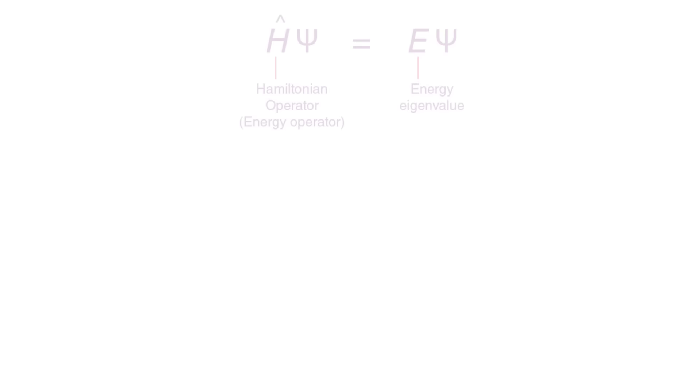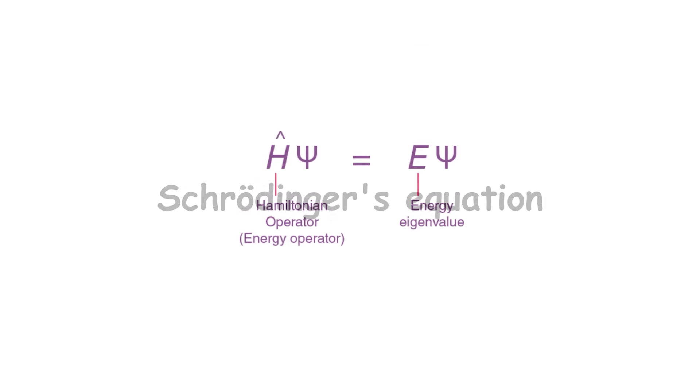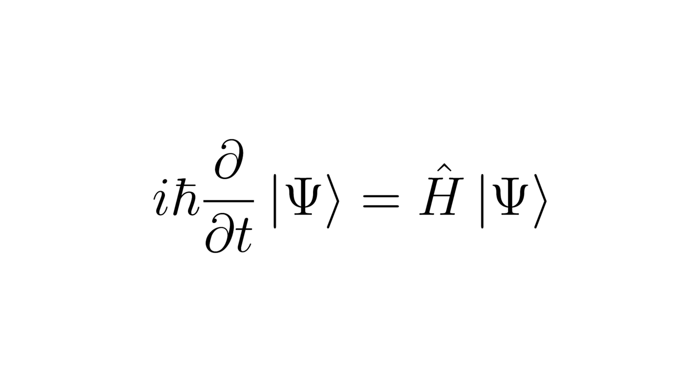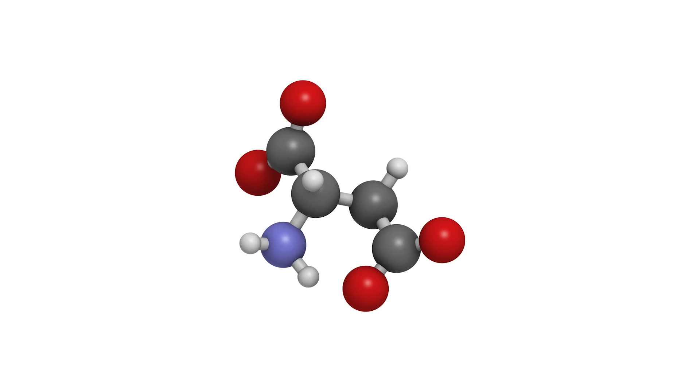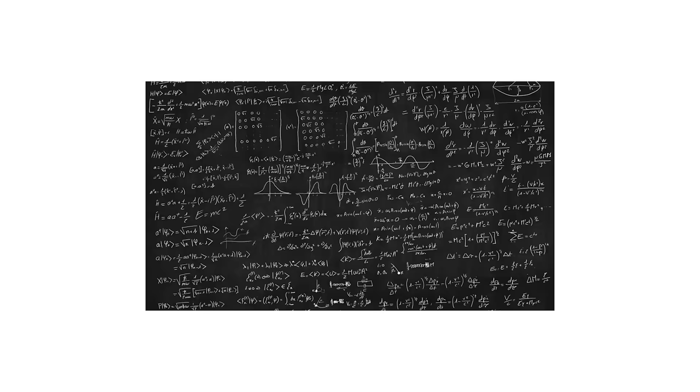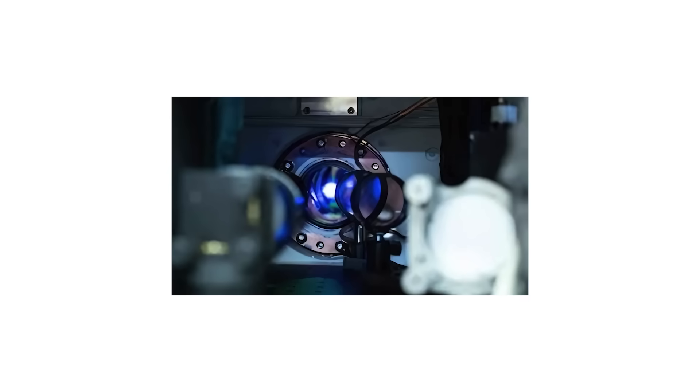1926: Schrödinger's Equation. The Schrödinger equation describes the quantum behavior of particles, such as electrons, through the wave function. It is essential for understanding atomic, molecular, and subatomic phenomena, and is key in quantum physics, chemistry, and modern technology.